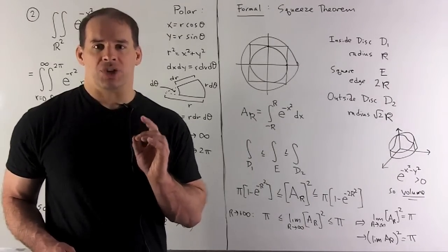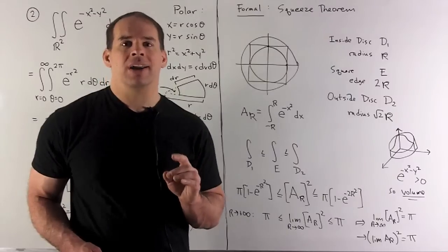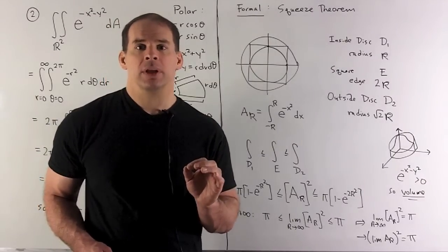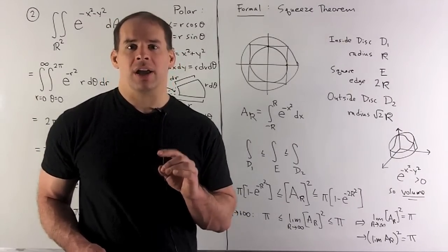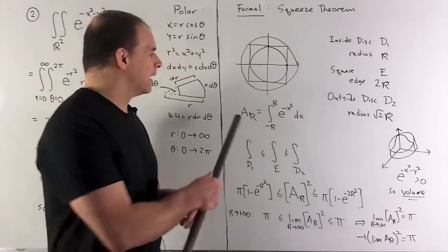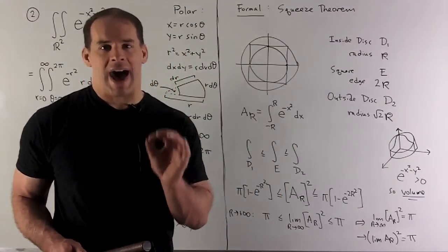That means the limit as r → ∞ of A_r equals √π. But the limit of A_r as r → ∞ is just our original integral I.